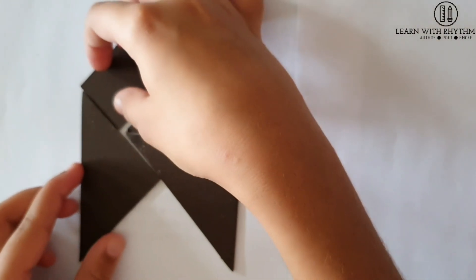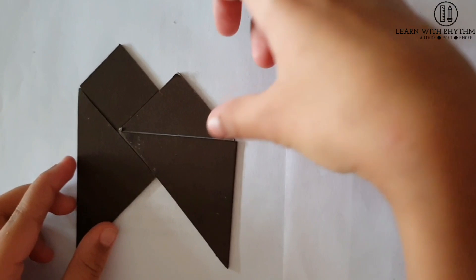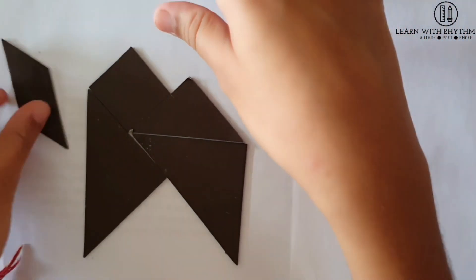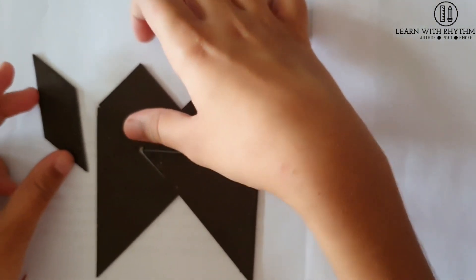Next we take this piece and put it here to form our camel's second hump. After that we take our parallelogram and put it here.